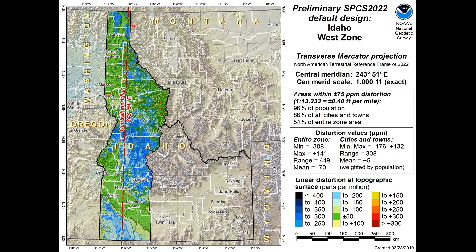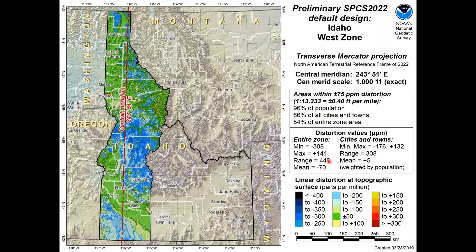One part of the process is to minimize the range of distortion in the zone — the difference between maximum and minimum — which here is 449 parts per million. We also look at population distribution. For this design the weighted mean distortion weighted by population is plus 5 parts per million, very close to zero. Again this is the default design or something similar; it's just a preliminary design.